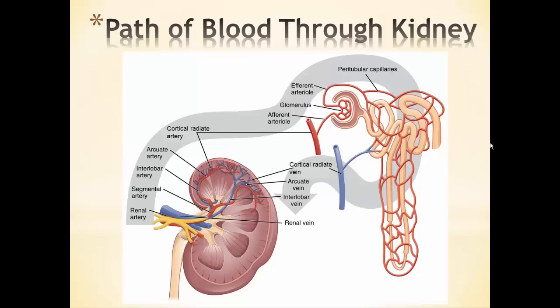The pathway of blood through the kidneys involves farther and farther division into smaller blood vessels until finally you get to the arterioles and then the capillaries — and we're going to have two capillaries in this circulation. Starting with the renal artery, it's a branch off of the aorta. When it enters the kidney it divides into segmental arteries — there are about five of those — and those branch out to interlobar arteries that go up to the cortex. From there, arteries branch further and further until finally you hit the afferent arteriole, which feeds into the glomerulus. The glomerulus is the first set of capillaries — a cluster of capillaries where all the filtration of the blood occurs.